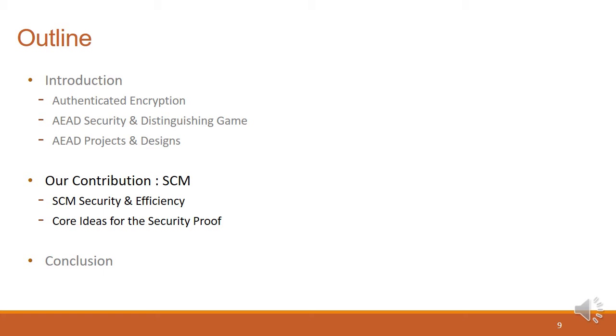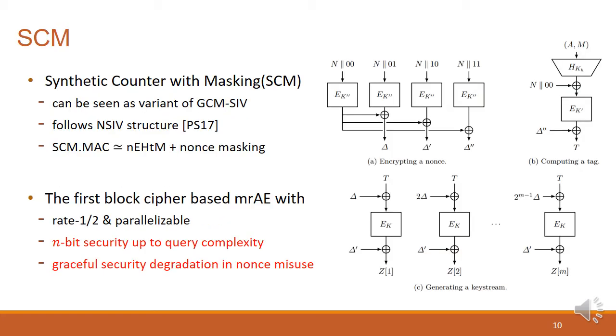Now, let's talk about our contribution, the synthetic counter with masking mode, SCM. SCM can be seen as another variant of GCM-SIV, and it follows an SIV structure which is proposed by Peyrin and Seurin in 2017. To encrypt the given message, SCM first encrypts the nonce and generates three nonce-based masks: delta, delta prime, and delta double prime. Then, it computes tag in a similar way to NHTM, together with delta double prime. In the encryption phase, it first computes the synthetic counters from the linear combination of tag and delta. At the end, it encrypts the synthetic counters, then adds the delta prime to get the keystream.